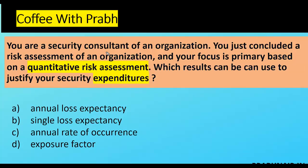Next coffee shot: you are a security consultant who just concluded a risk assessment focused primarily on quantitative, monetary assessment. Which result can be used to justify security expenditure? Option A, ALE, makes sense because ALE is formed through SLE and ARO. SLE is the Single Loss Expectancy — the cost from a single event. ARO is the Annual Rate of Occurrence — how many times it occurs. Exposure factor is a percentage.